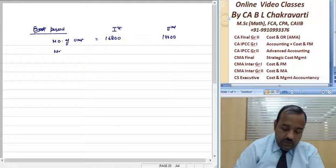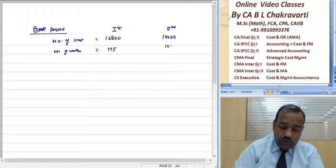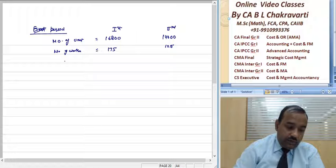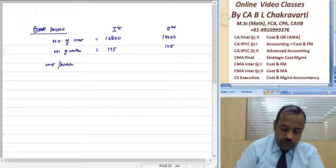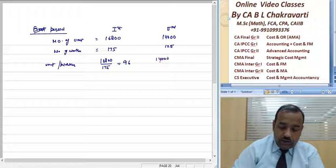Number of workers is 175 or 125. So, unit per worker, if I see 16,800 divided by 175, it is 96, and 14,000 divided by 125, so this is 112.